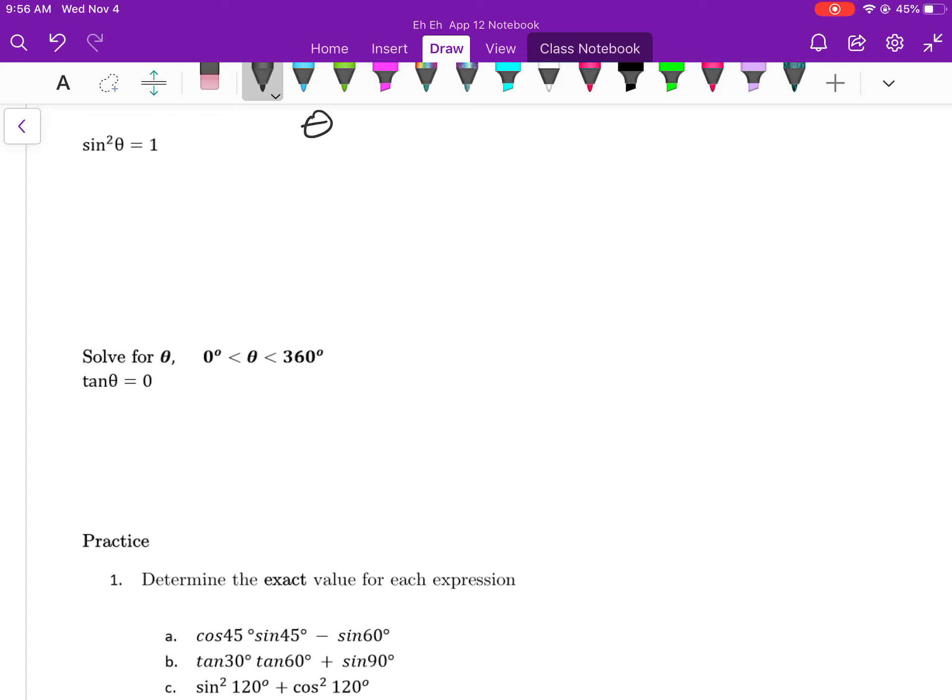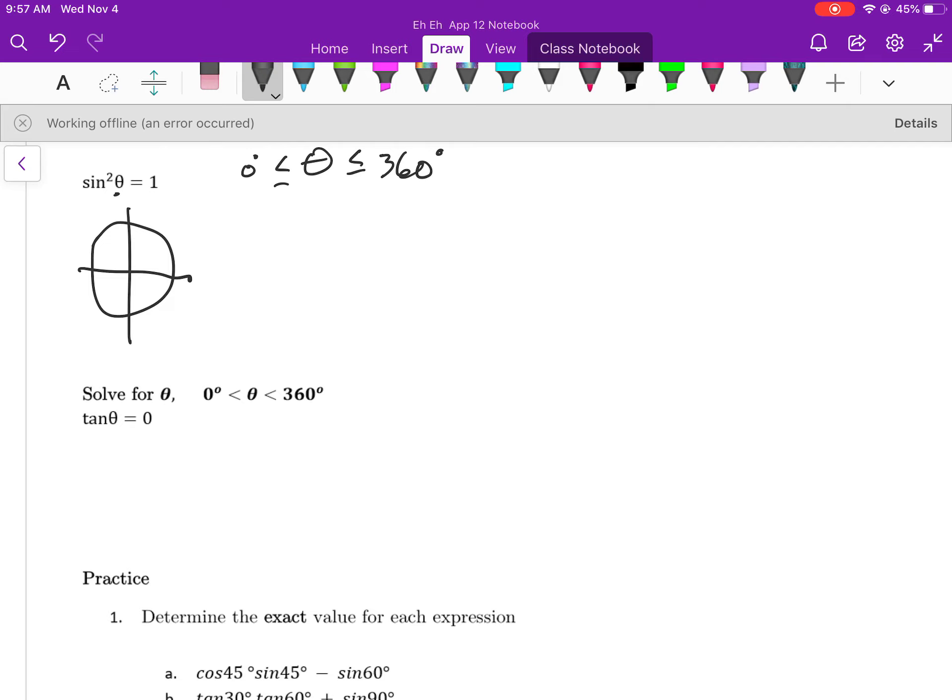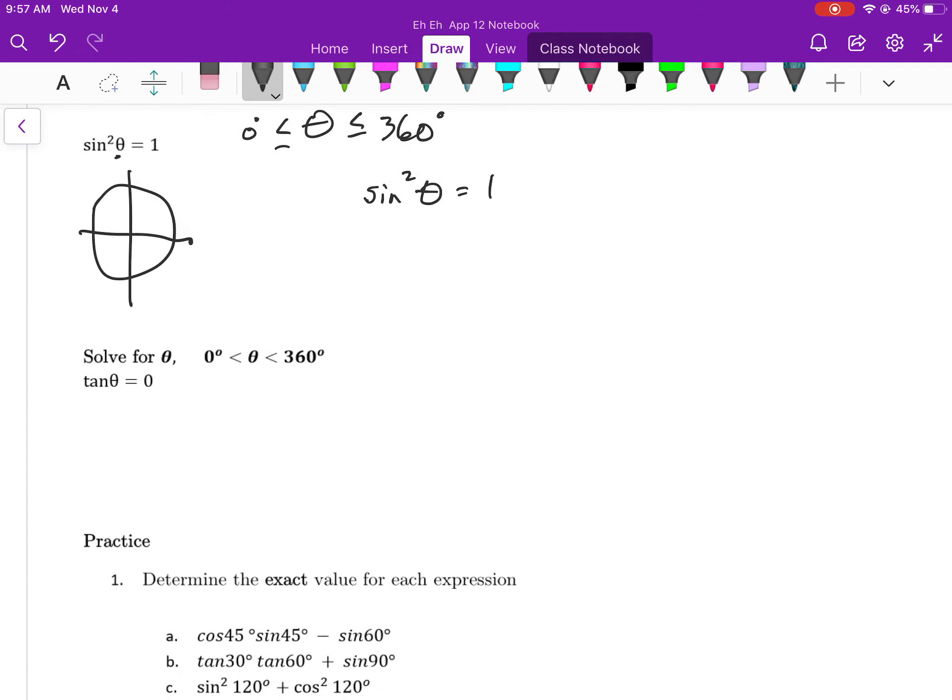Now, again, we're going to solve for theta between 0 and 360 degrees here. What that really means is, here's my unit circle. I am going to start at 0 degrees, and I'm going to go exactly 1 revolution around the unit circle. I am going to try to find the angle theta such that when you square the sine value, it is exactly equal to 1. Now, that seems like a tall order, but I'm going to start off simple by just going, well, sine squared theta is equal to 1. And we have a little bit of practice at this, don't we? We are going to solve for the trigonometric ratio.